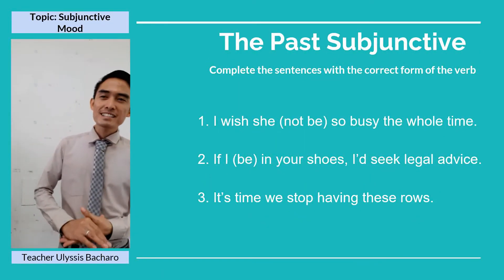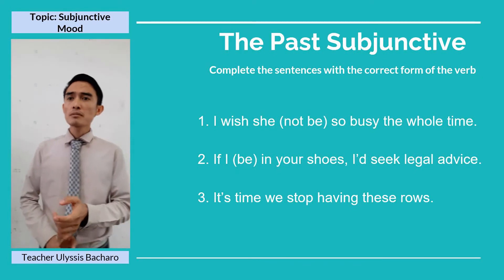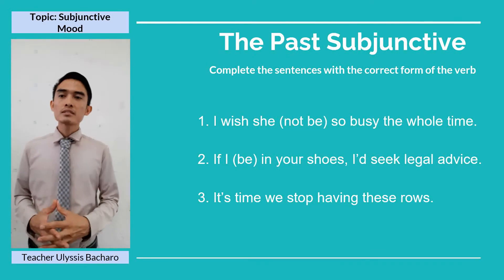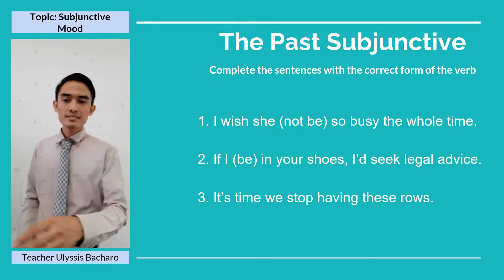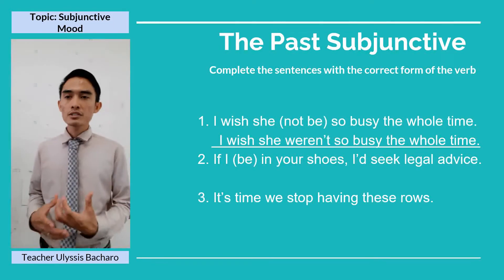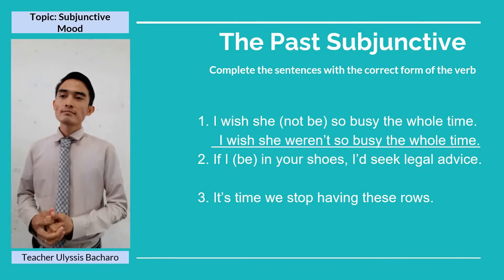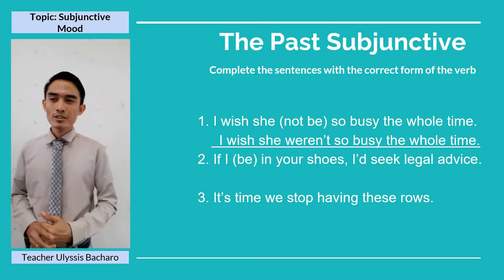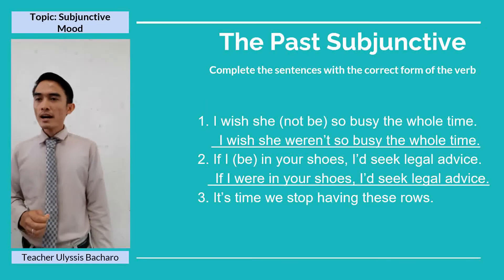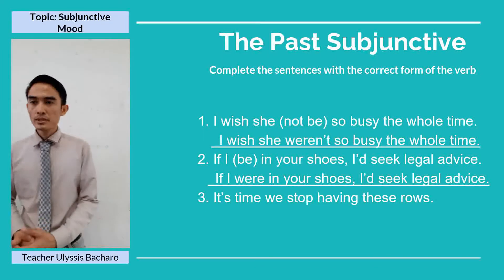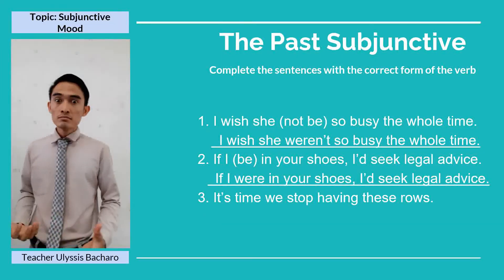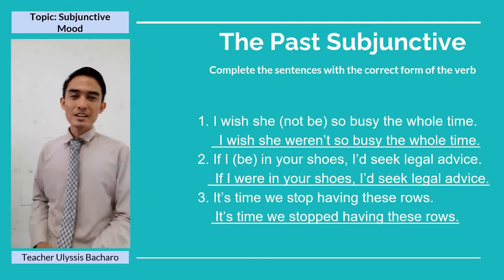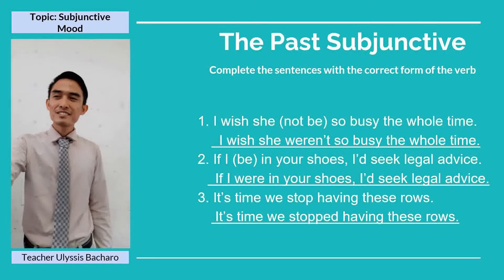Now let's proceed to exercises on the past subjunctive. We are going to complete the sentences with the correct form of the verb. Number one: 'I wish she not be so busy the whole time' — the answer is 'I wish she weren't so busy the whole time.' Number two: 'If I be in her shoes, I'd seek legal advice' — it should be 'If I were in her shoes, I'd seek legal advice.' Number three: 'It's time we stop having these rows' — in subjunctive mood: 'It's time we stopped having these rows.' I hope you have learned a lot from these exercises.